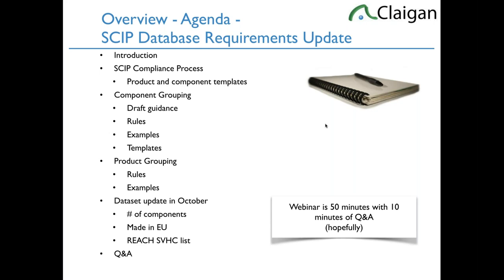I'm going to talk about the guidance you'll start seeing soon, specifically tangible rules — what you can do and what you can't. Then I'll talk about some dataset changes. None of them are particularly earth-shattering: moving the number of components from a mandatory to an optional field, some minor changes in the Made in EU field. Then we'll have Q&A. This is intended to last about 50 minutes, with around 15 minutes of Q&A. If you have questions, please feel free to submit them.